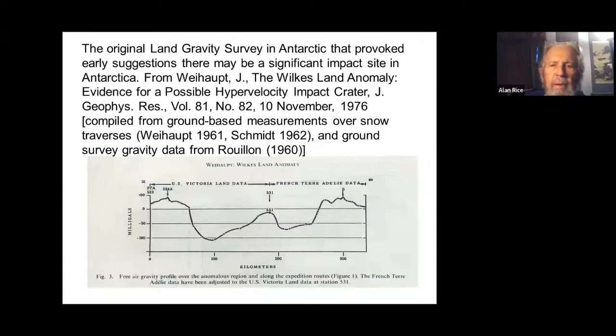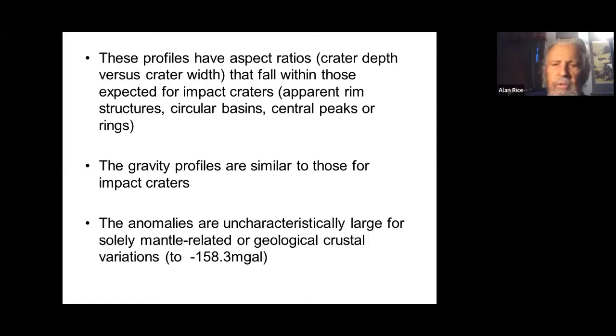This is what Jack dug up on his crossing of Antarctica—the Wilkes Land anomaly. He took this as evidence for a possible high-velocity impact crater and published in Internal Geophysical Research in '76, although he did the work in '61. These profiles have aspect ratios, crater depth versus crater width, that are exactly what you expect for an impact crater. There are rim structures and central peaks.